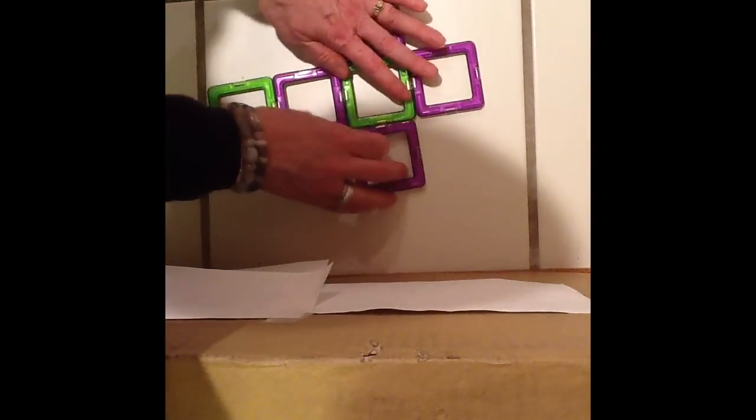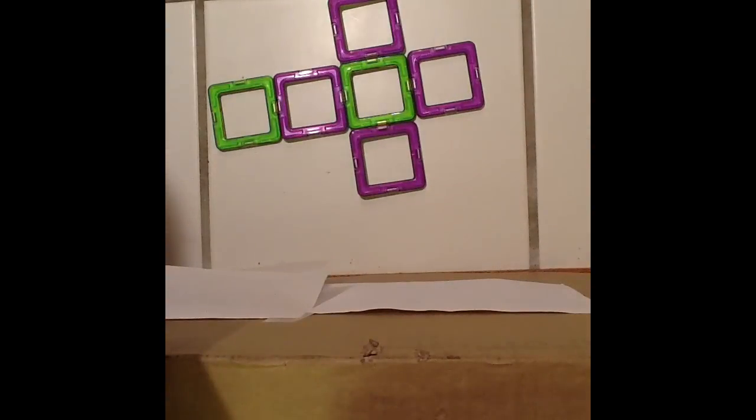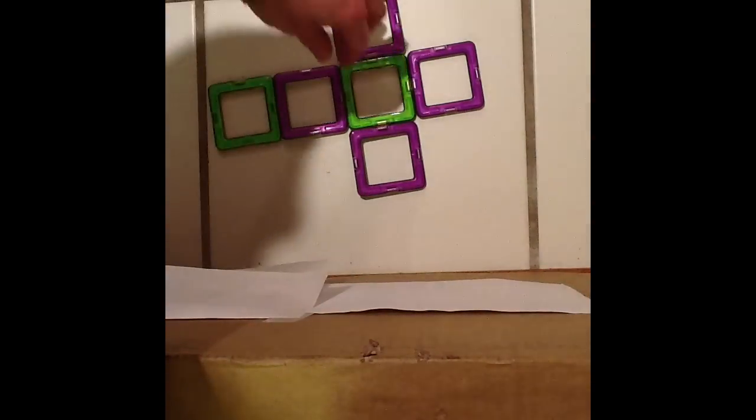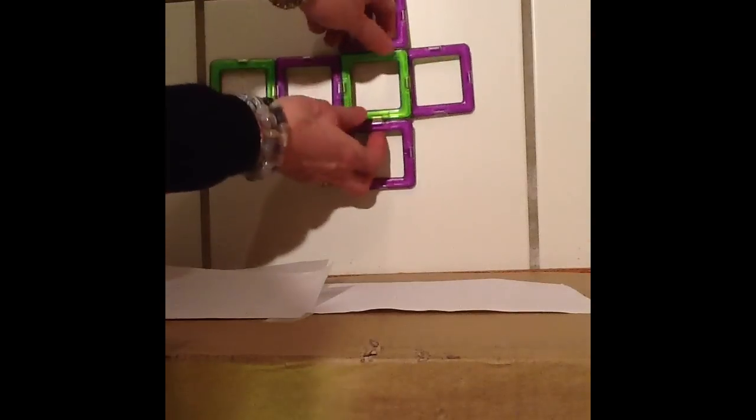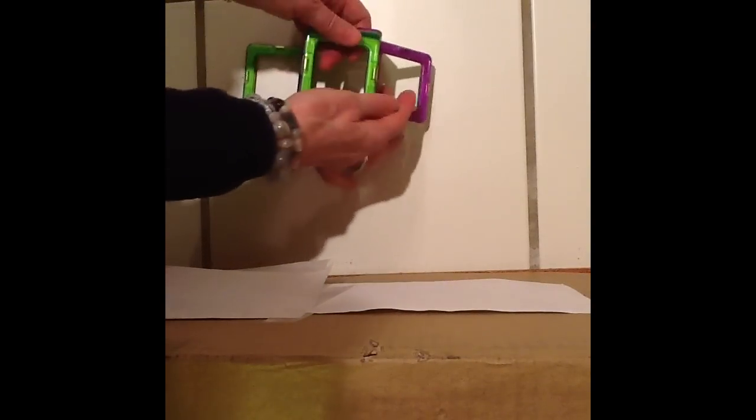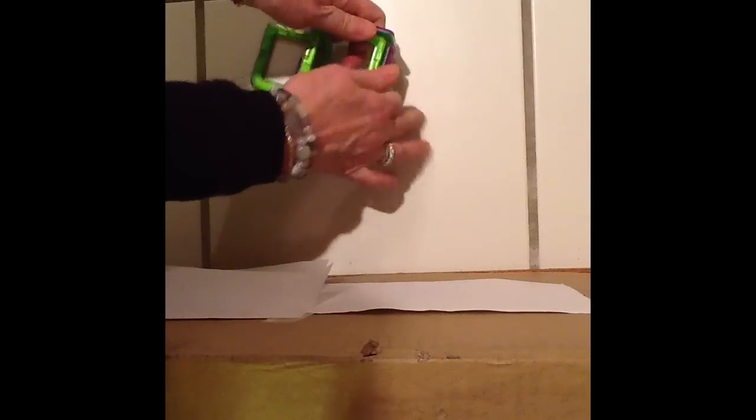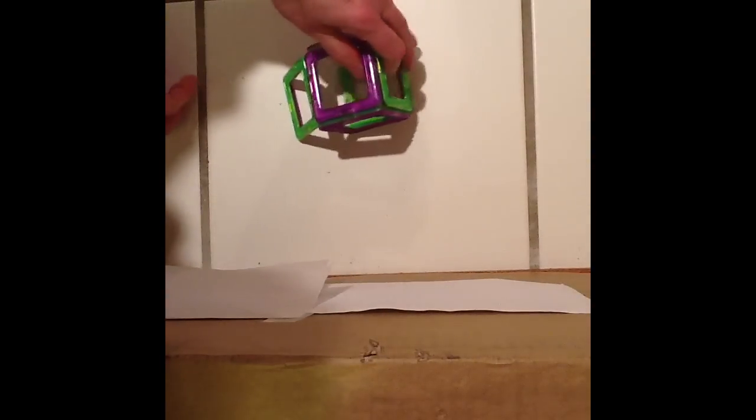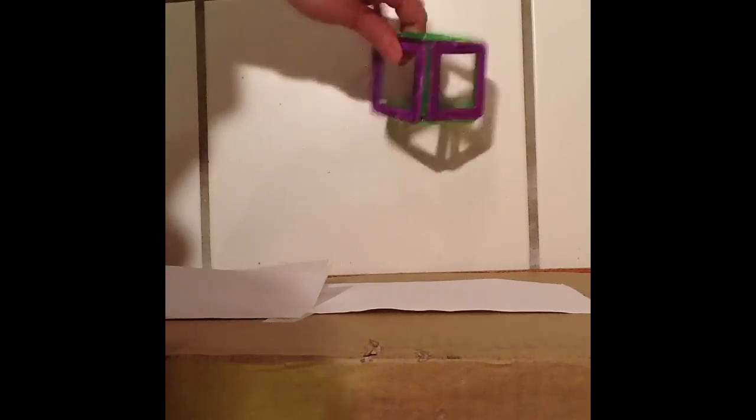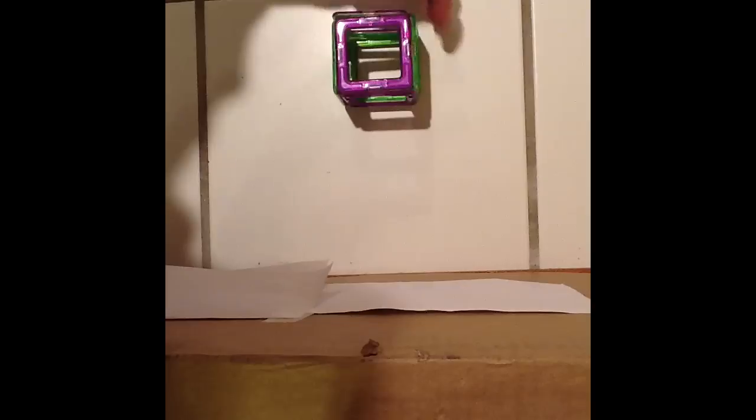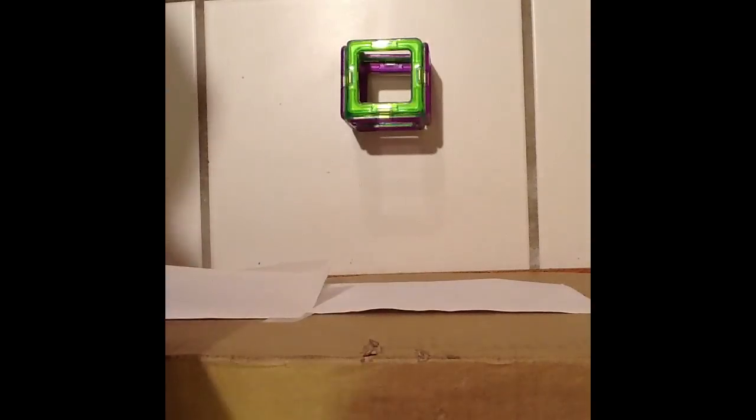Would this fold into a cube? I think it would. I think this base would have these purple lateral faces fold in to make the sides, and then the green face here flops over and makes the opposite base. The four purple lateral faces are there. It is a cube.